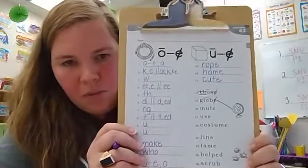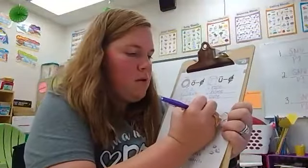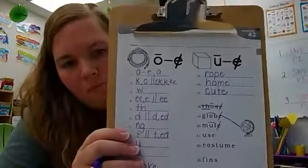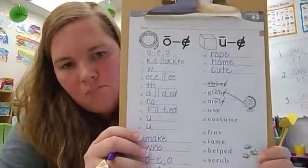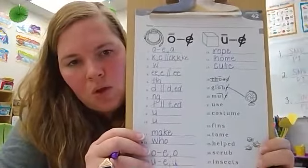Number 20 is mule, U consonant E. Number 21 is use. First we have U consonant E. Again, it makes the Z sound. The S makes the Z, which is voiced, so we cross it out.